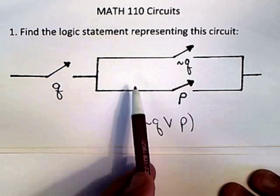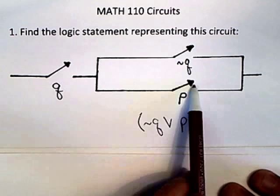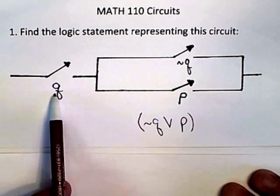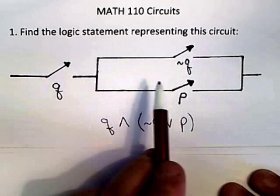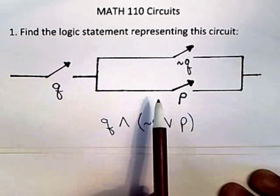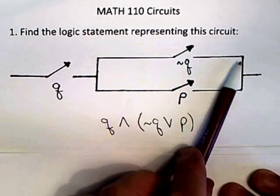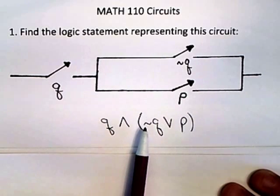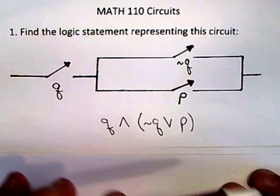And then that entire thing, which is represented by this compound statement, is on the same line with this Q. So they are ANDed together because that's in series, and in series is an AND. So this Q is ANDed with this compound statement here, and that compound statement here is a parallel, so it's an OR.